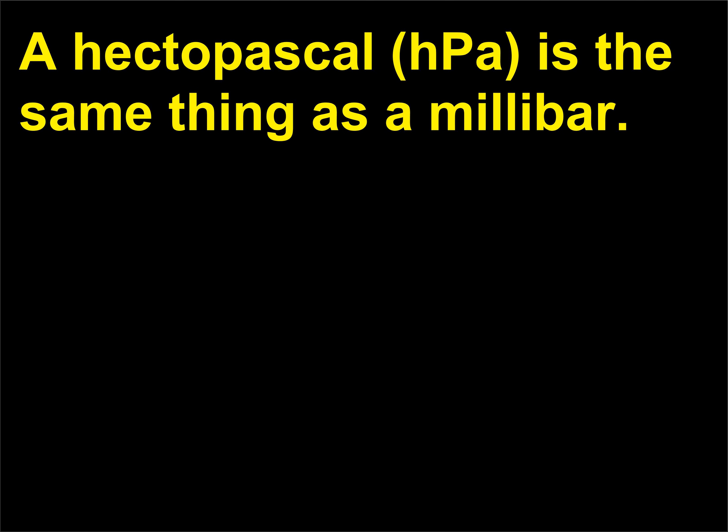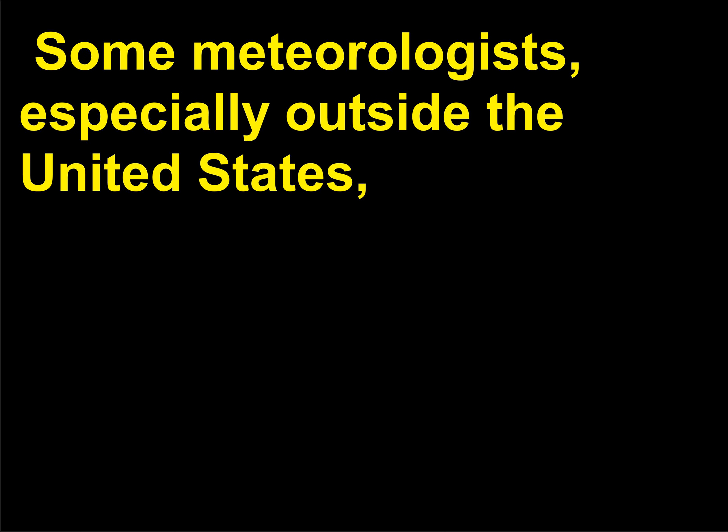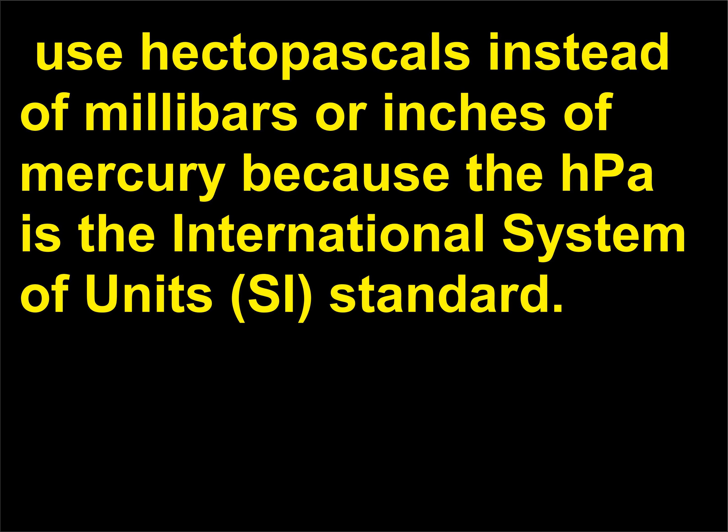What is a hectopascal? A hectopascal (hPa) is the same thing as a millibar. Some meteorologists, especially outside the United States, use hectopascals instead of millibars or inches of mercury because the hPa is the International System of Units (SI) standard.